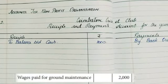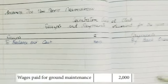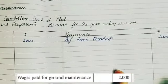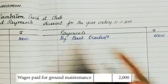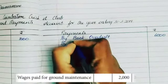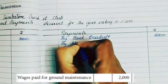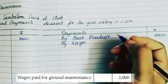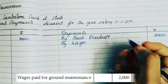The next item is wages paid for ground maintenance. This is obviously a normal payment, so when you're paying it, it goes to the payment side. Write 'By Wages' for 2,000 rupees.